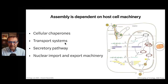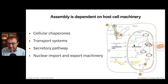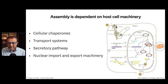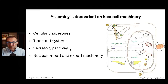Transport systems get proteins to the right location. We talked about transport systems getting viral genomes into the cell; now we're going to talk about transport systems getting out of the cell. The secretory pathway is used — this is the pathway by which membrane proteins are put on the surface of the cell, the plasma membrane. And of course, there's nuclear import and export machinery.